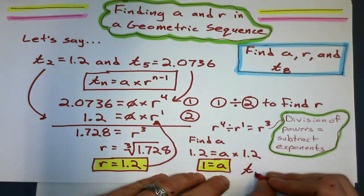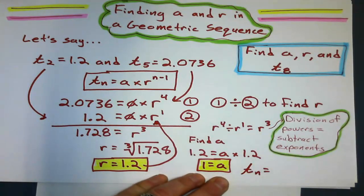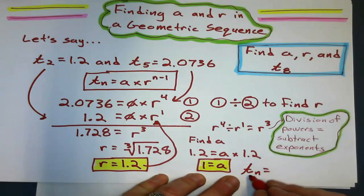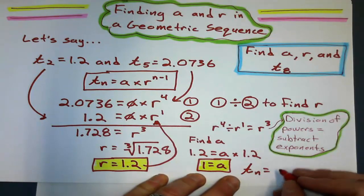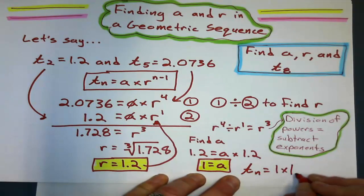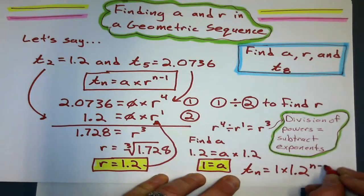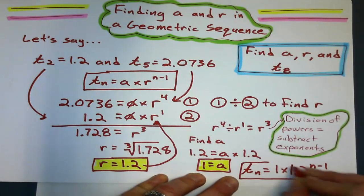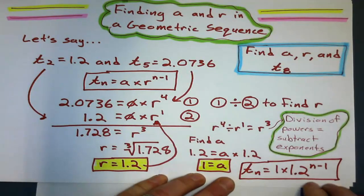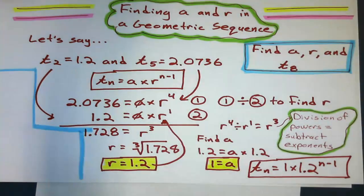And I did that by substituting it into one of the formulas. Well, if I want to, I could write the general formula for this sequence. This sequence is equal to the first term, 1, times the common ratio, n minus 1. Even though the question didn't ask for that, there's the general formula.